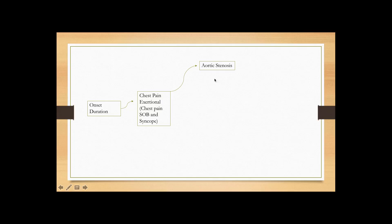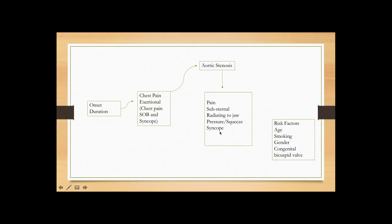Not everybody develops aortic stenosis — this will be a high-risk patient. The chest pain is classic substernal, but instead of radiating to the shoulder or left arm, it radiates to the jaw and feels like pressure or a squeeze. It is sometimes accompanied by syncope. Another very common symptom is fatigue — these patients get very tired very quickly because of exertion intolerance.